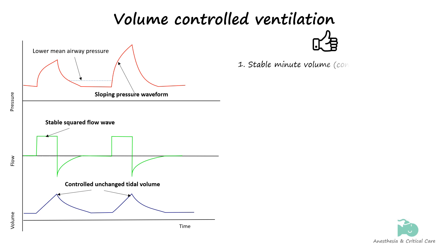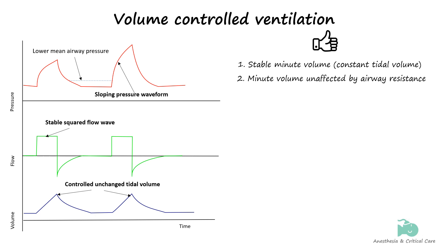The main advantages of volume-controlled ventilation are basically the disadvantages of pressure-controlled ventilation. It ensures a consistent tidal volume, which leads to a stable minute volume. This reliability is especially important when precise control of carbon dioxide levels is crucial, such as in cases of traumatic brain injury. The minute volume remains stable even if pulmonary characteristics change, meaning that if airway resistance fluctuates significantly — as can happen during treatment of severe asthma — it continues to provide a reliable minute volume. Additionally, volume-controlled ventilation starts with a lower flow rate compared to pressure-controlled modes, which is advantageous when airway resistance is high, as it avoids creating a high-pressure peak early in the breath and helps prevent the breath from being cut short by pressure alarms.